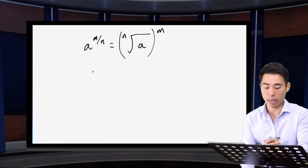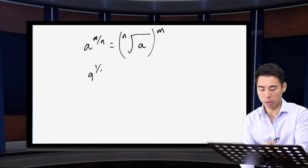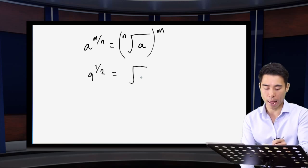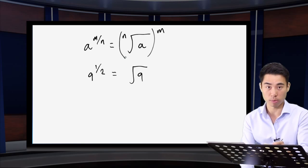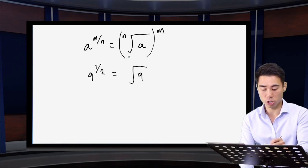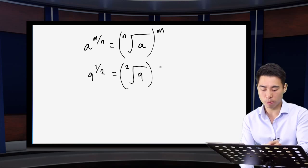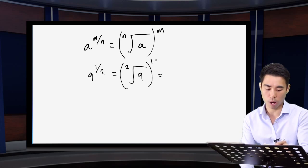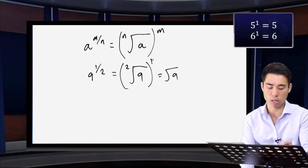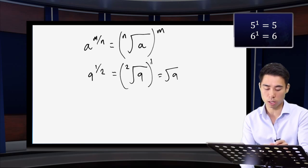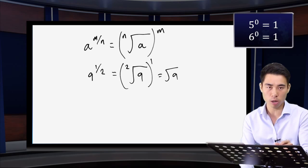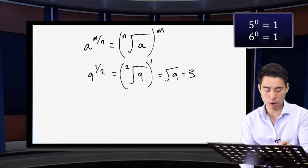In a specific form: if I have nine to the power half, the denominator is two, so I'm looking at the square root. The numerator is one, and anything raised to the power one is just itself, so I can disregard it. All I'm looking for is the square root of nine, which gives me three.